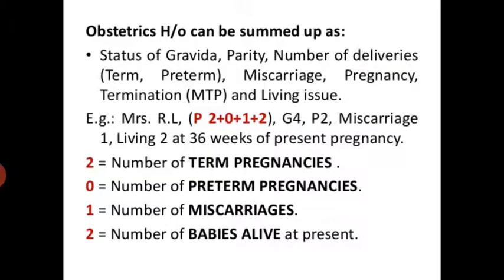Obstetrical history can be summed up as: status of gravida, parity, number of deliveries (term or preterm), miscarriage, pregnancy termination (MTP), and living issue.